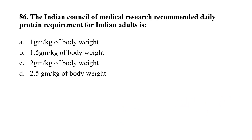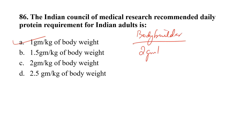Question number 86. The Indian Council of Medical Research recommended daily protein requirement for an Indian adult is: Option A, 1 gram per kg body weight; Option B, 1.5 gram per kg; Option C, 2 gram per kg; Option D, 2.5 gram per kg. The correct option is A — 1 gram per kg body weight. For bodybuilders, the requirement is 2 grams per kg.